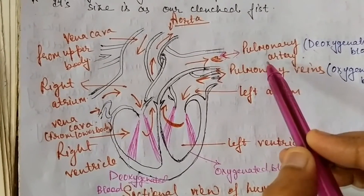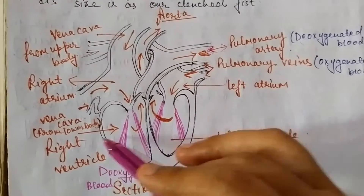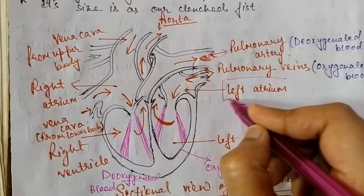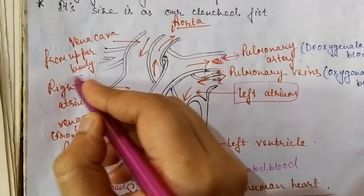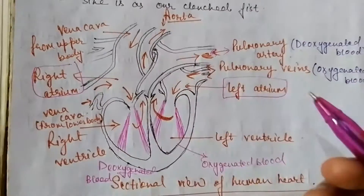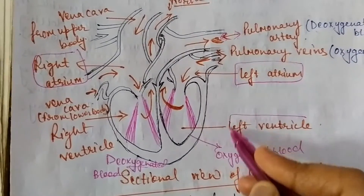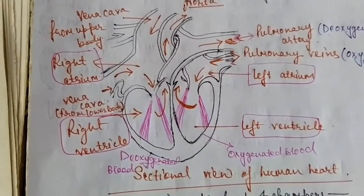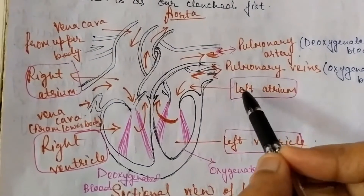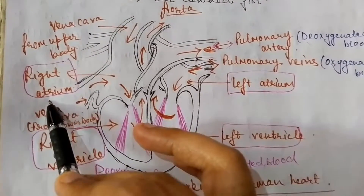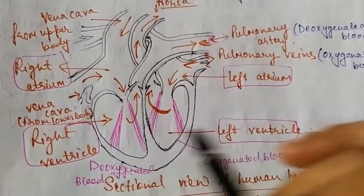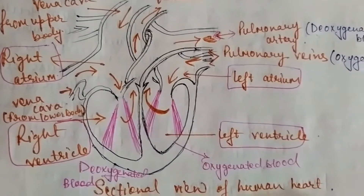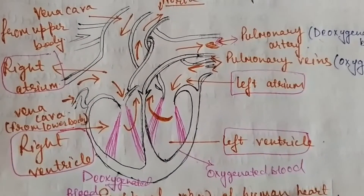There are two atria — left atrium and right atrium — and two ventricles — left ventricle and right ventricle. So the heart has four chambers: left atrium, right atrium, left ventricle, and right ventricle. Now, how does blood travel through the heart?